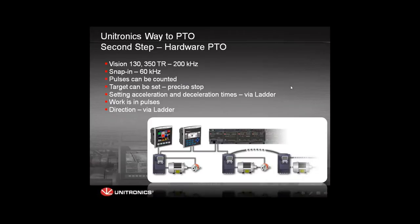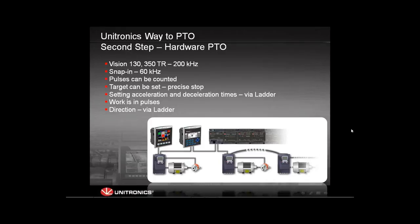The second step was much more advanced and was implemented in the Vision 130, 350, and several snap-ins. This high-speed output already had a frequency of 200 kilohertz, or 60 kilohertz using the snap-in. The advantages were that pulses could be counted, a target could be set, and you could reach a precise stop after a predefined number of pulses. Setting the acceleration and deceleration times was conducted via the ladder.